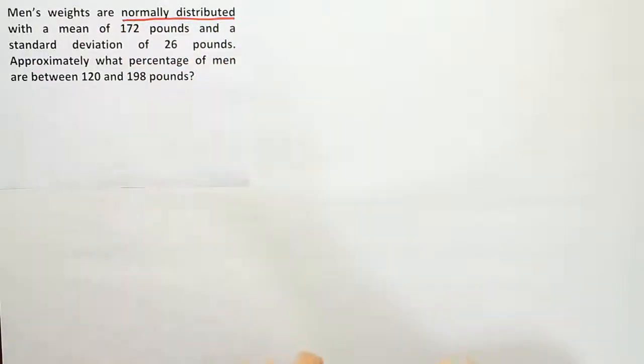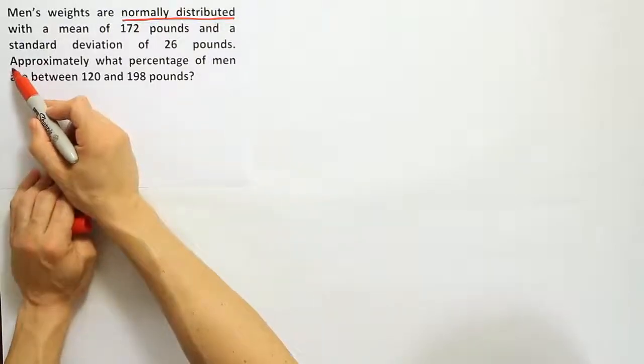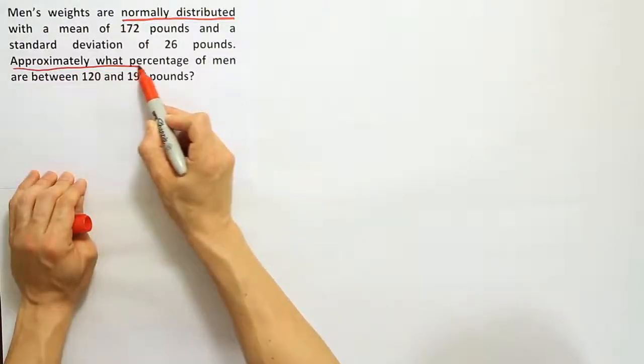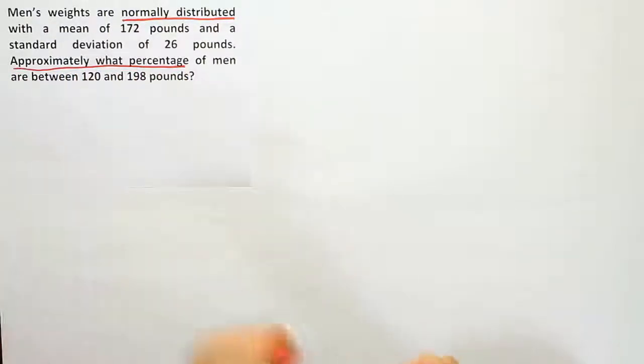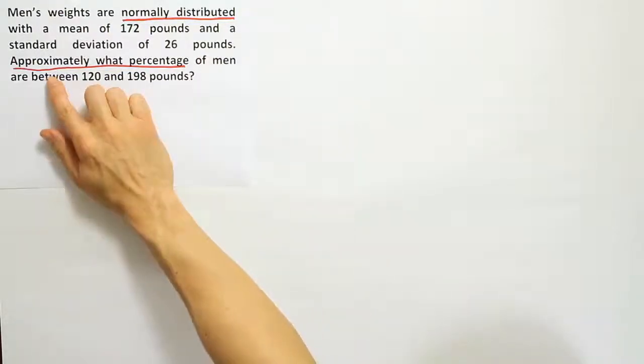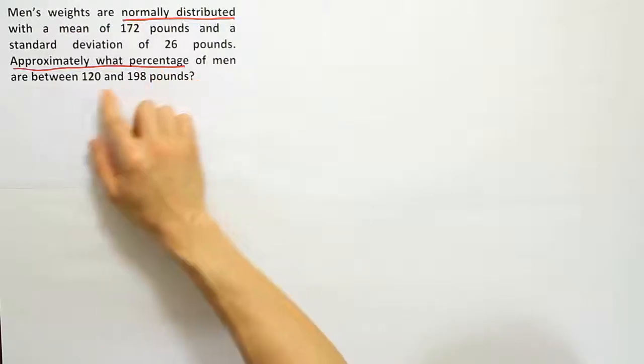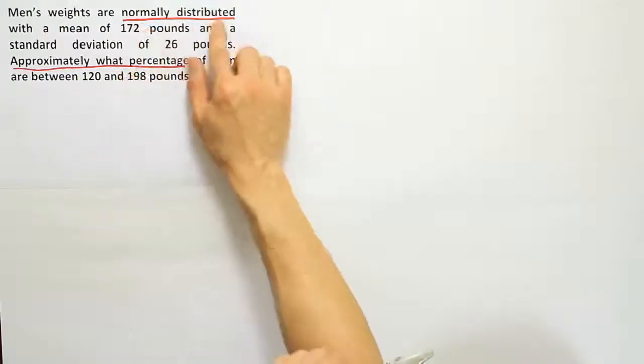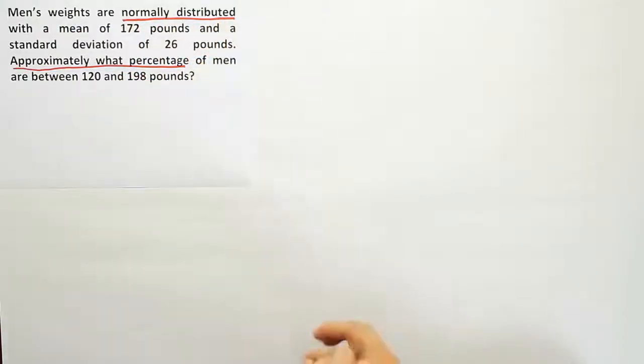This makes me think of a bell curve, and then they ask approximately what percentage of men are between 120 and 198. When I see this phrase approximately what percentage are within this interval and the mention of normally distributed, I'm thinking empirical rule.